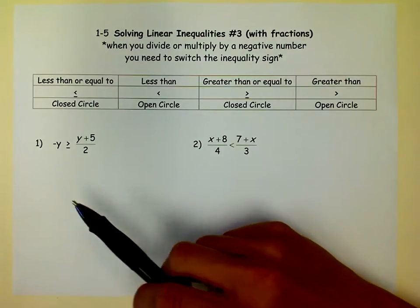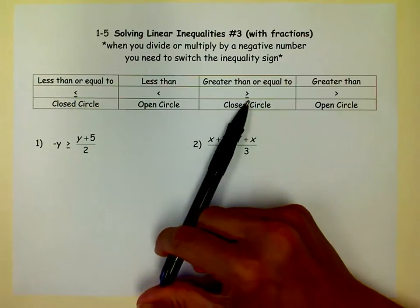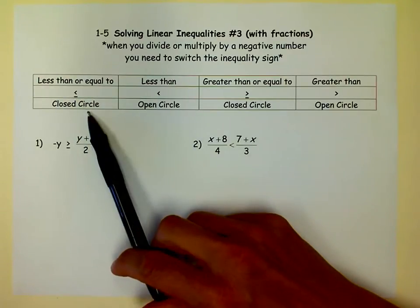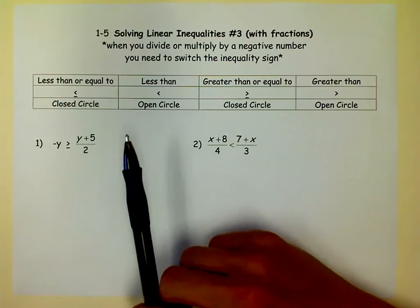So just a refresher again, remember that when you have a less than or equal to or a greater than or equal to, it's a closed circle on our graph, on our number line. And if you just have a less than or greater than, it's going to be an open circle.